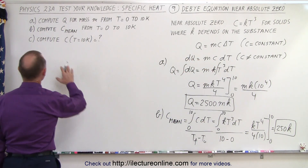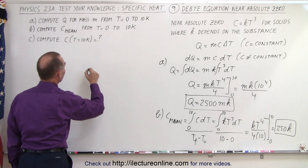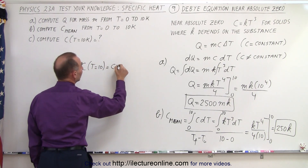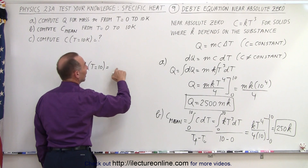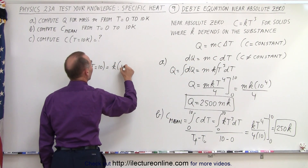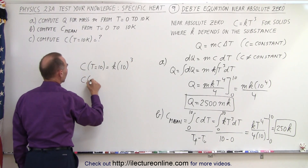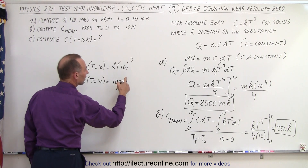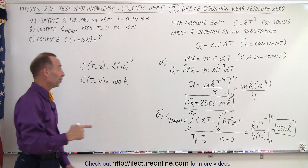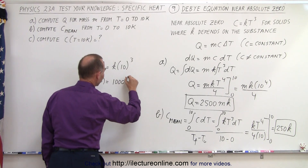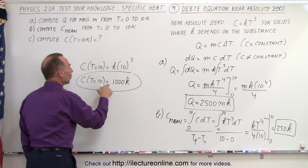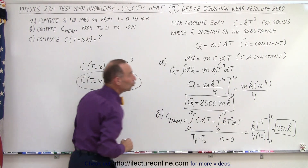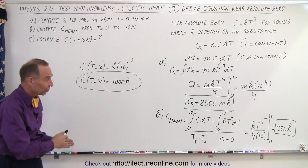Finally, for Part C, we find the specific heat when T equals 10 K. Using the equation C equals K times T cubed, that would be K times 10 to the 3rd power. So C when T equals 10 is equal to 1,000 K. The mean was 250 K over the span from 0 to 10 degrees, and that is how we solve this problem.